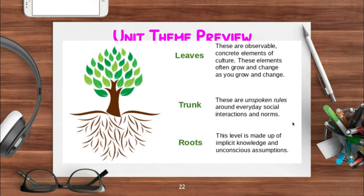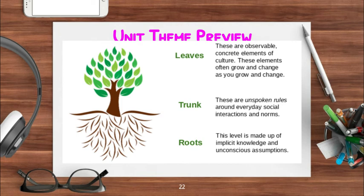The trunk of the tree represents the unspoken rules around everyday social interactions and norms. Your parents don't ever say these things to you exactly, but you pick them up by watching your parents or other people who are part of your culture. Examples include whether establishing eye contact is a good thing or a bad thing, how you properly greet an older person like your grandparents, what is appropriate language to use in a certain space like home, church, or mosque, and the way you show affection — some cultures give great big bear hugs, while others are more comfortable with other signs of affection.